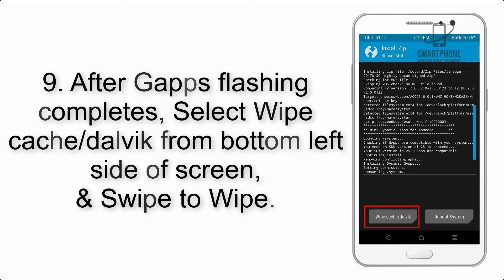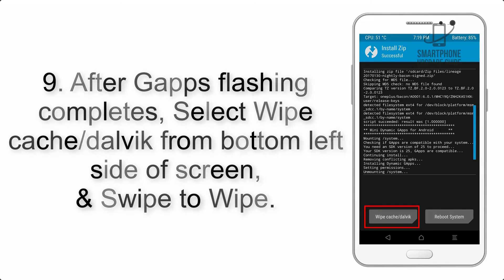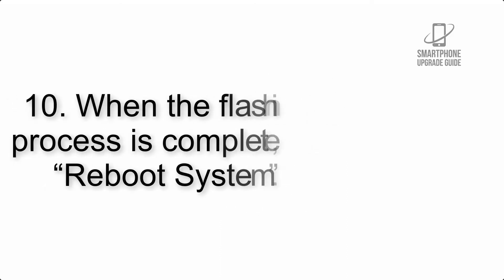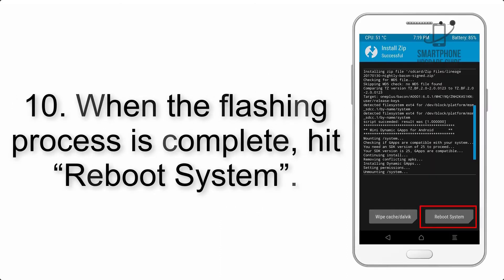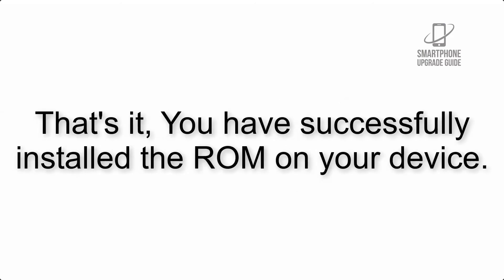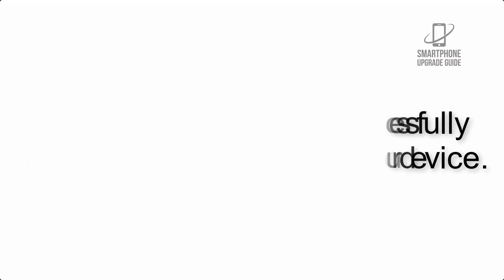Step 9: After gapps flashing completes, select Wipe Cache and Dalvik from the bottom left side of the screen and swipe to wipe. Step 10: When the flashing process is complete, hit Reboot System. That's it — you have successfully installed the ROM on your device.